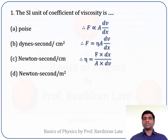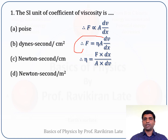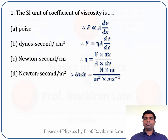Rearranging the equation for η: η = F × dx / (A × dv). Now I need to find the SI unit of this quantity. Force is measured in newtons, dx is distance measured in meters, area is measured in meter square, and velocity is measured in meters per second.